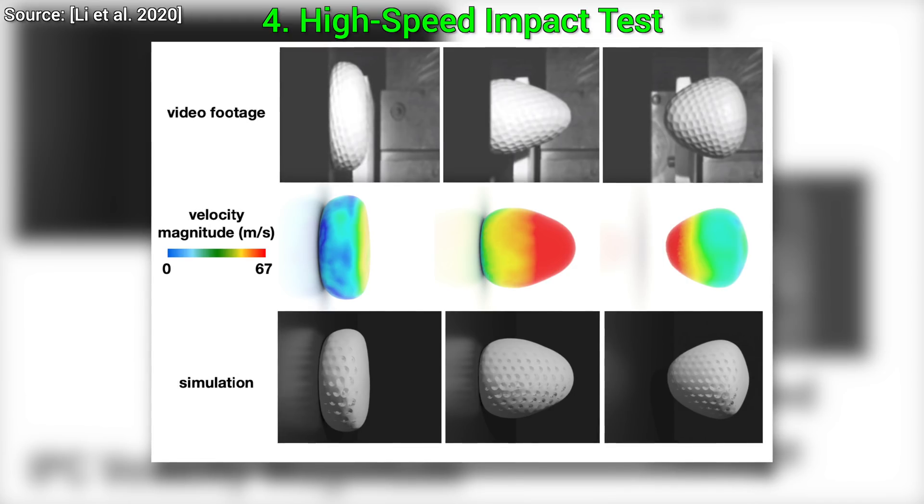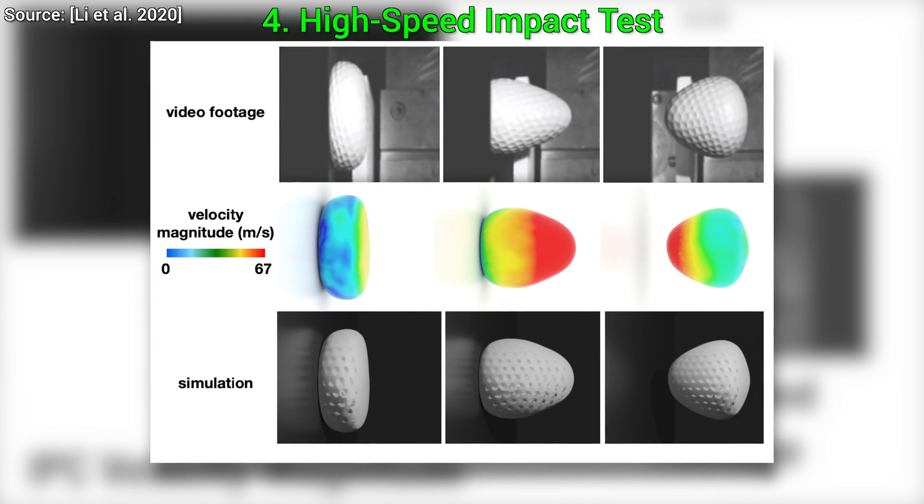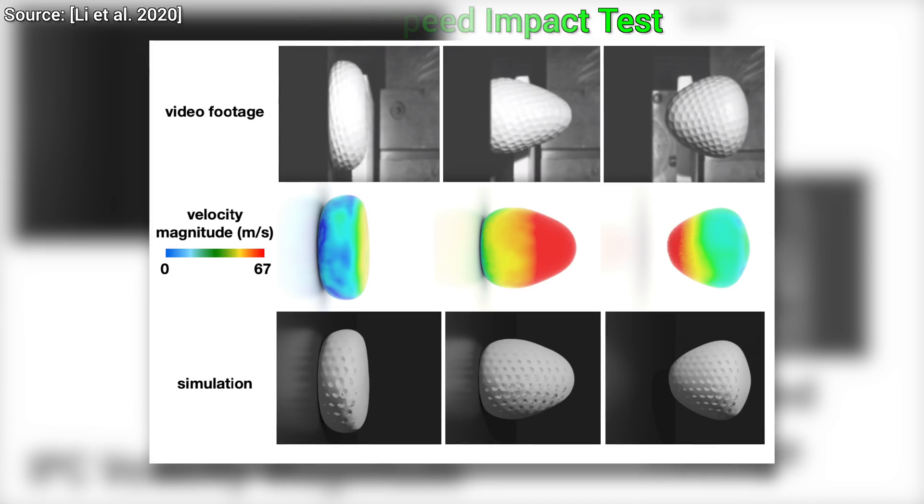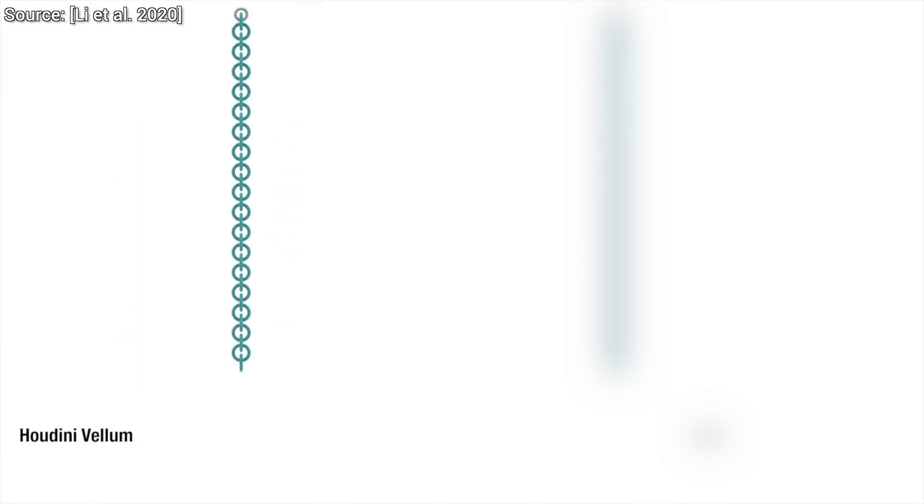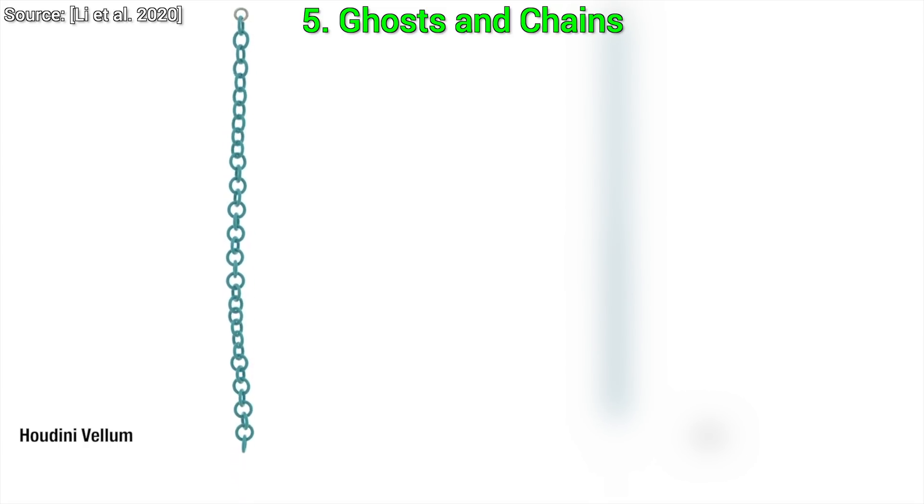This sounds all great, but do we really need this technique? The answer shall be given by experiment number five: ghosts and chains. What could that mean? Here you see Houdini's vellum, the industry-standard simulation for cloth, soft body, and a number of other kinds of simulations. It is an absolutely amazing tool, but wait a second, look.